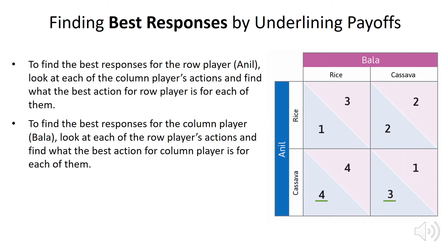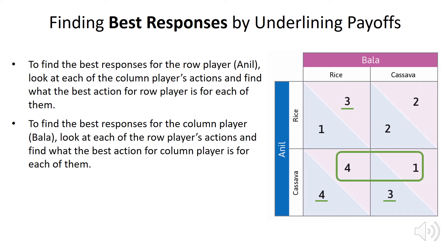Turning to Bala, we consider what Bala's best action is for each of the possible actions of Anil. When Anil plays rice, Bala would get 3 by playing rice and 2 by playing cassava, so he'll prefer to play rice. If Anil plays cassava, Bala is also going to prefer to play rice rather than cassava.